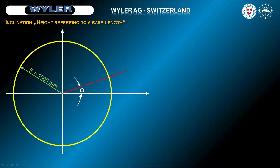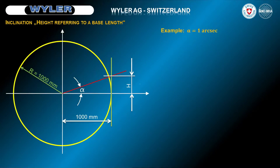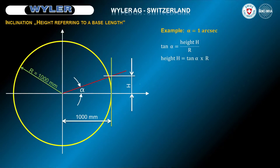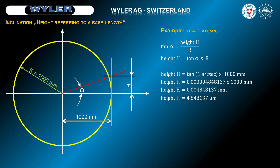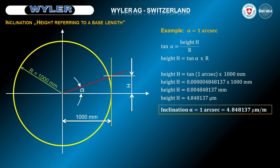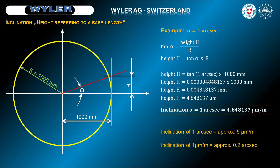Now, the derivation of the conversion of arc degrees, minutes, seconds to µm per meter. In our example, we calculate the angle alpha equal to 1 arc second in µm per meter. Tangent alpha equals height h divided by r. In our example, r is 1000 mm. Consequently, h equals tangent of alpha multiplied by r. We set the height h in relation to the base length r of 1000 mm. From this it follows that an inclination alpha equal to 1 arc second equals 4.848137 µm per meter.